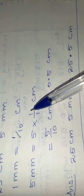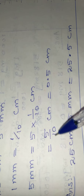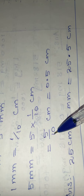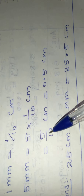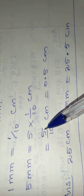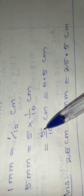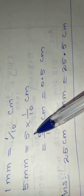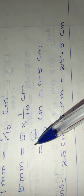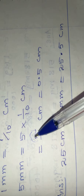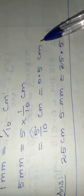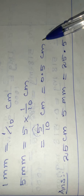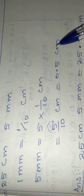5 by 10 — the denominator is 10. There is only one zero in 10, so we move the decimal point to the left by one digit. The answer is 0.5 centimeter.